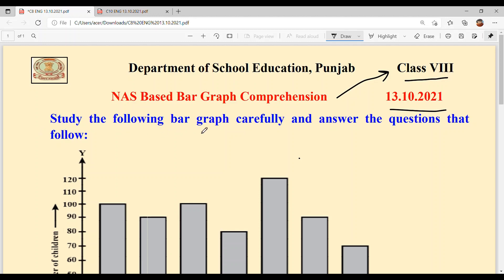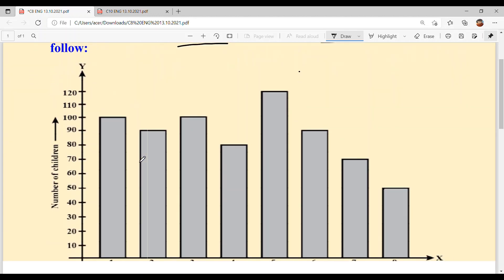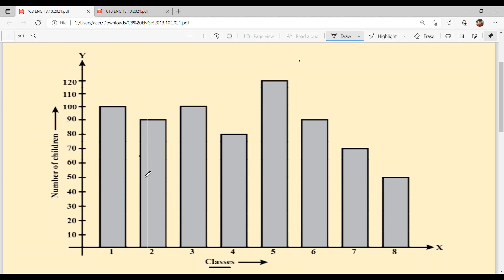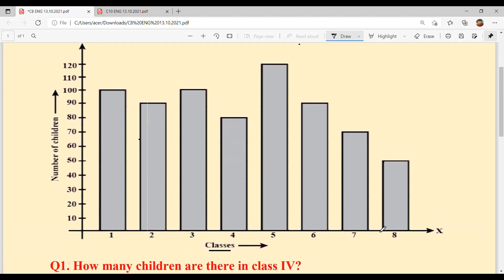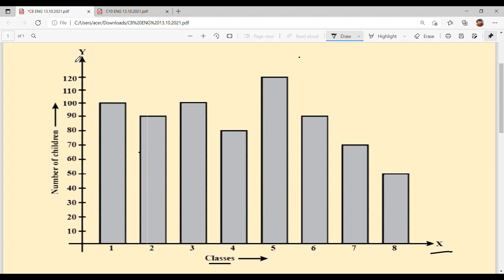Study the following bar graph carefully and answer the questions that follow. You can see the x-axis and y-axis. The x-axis represents classes and the y-axis represents number of children in each class.